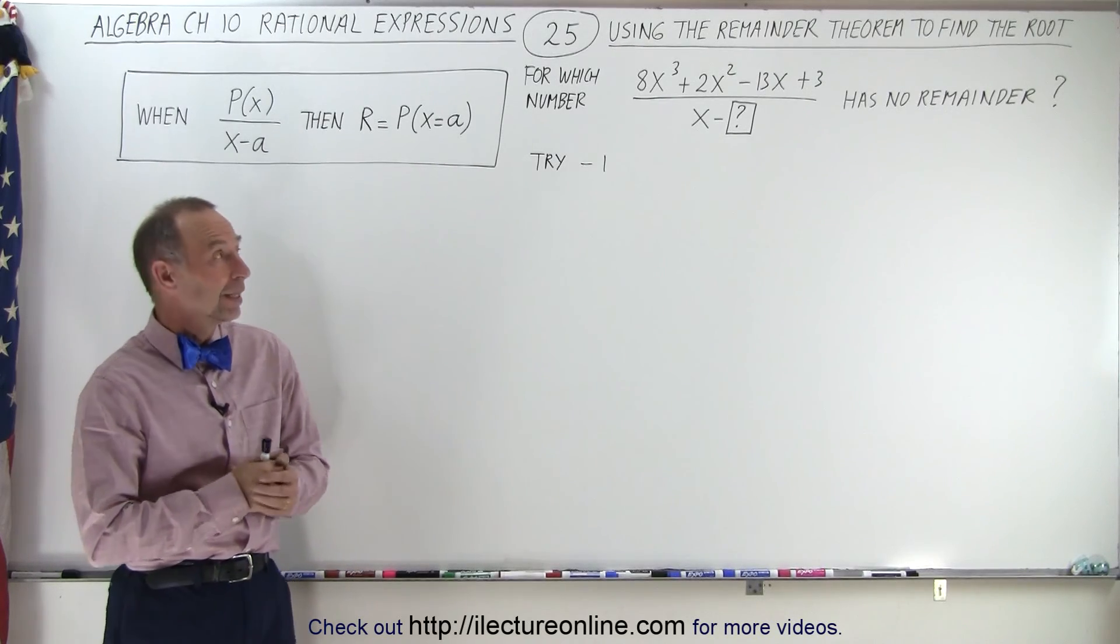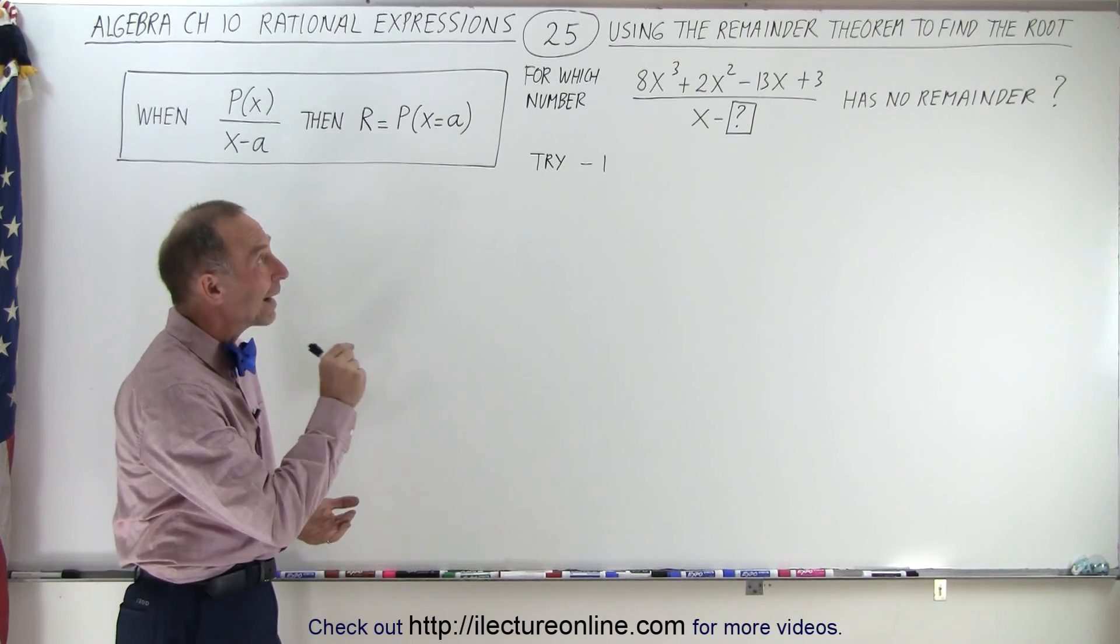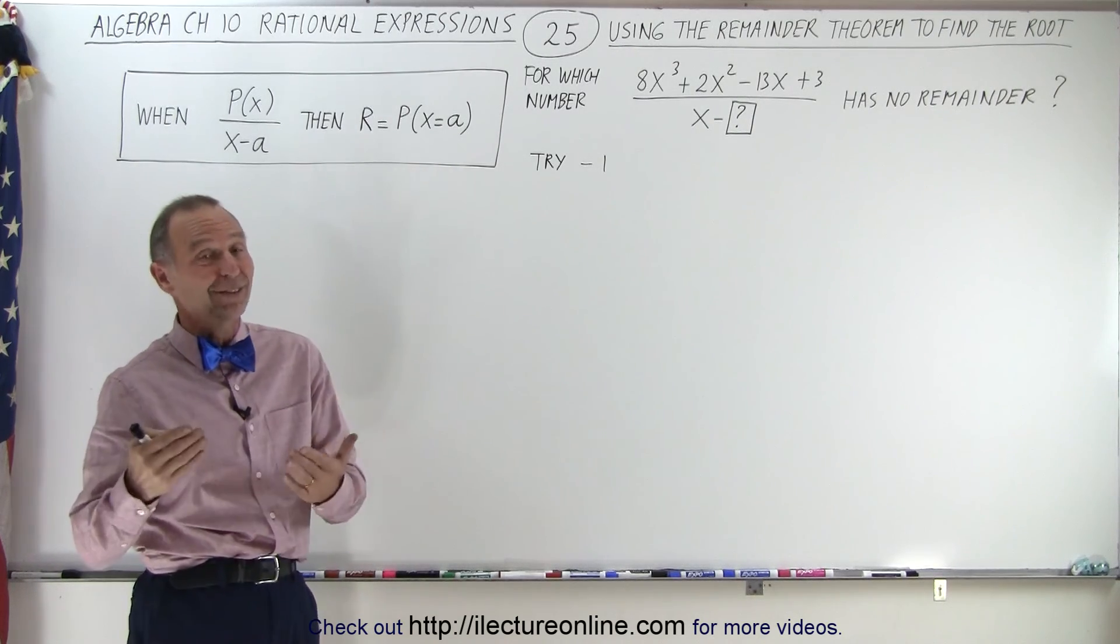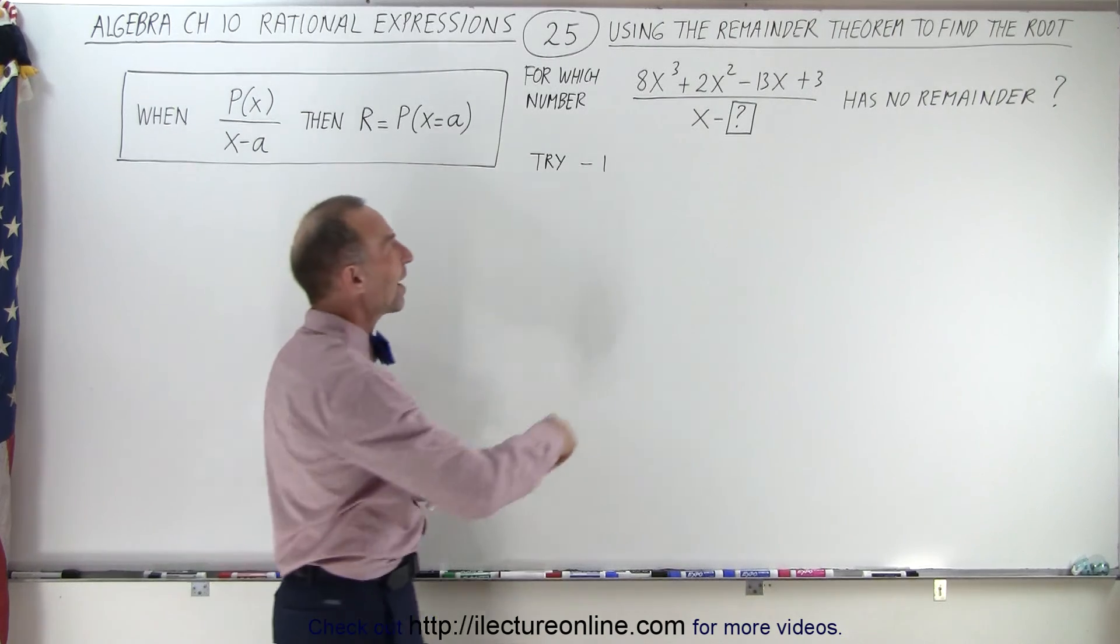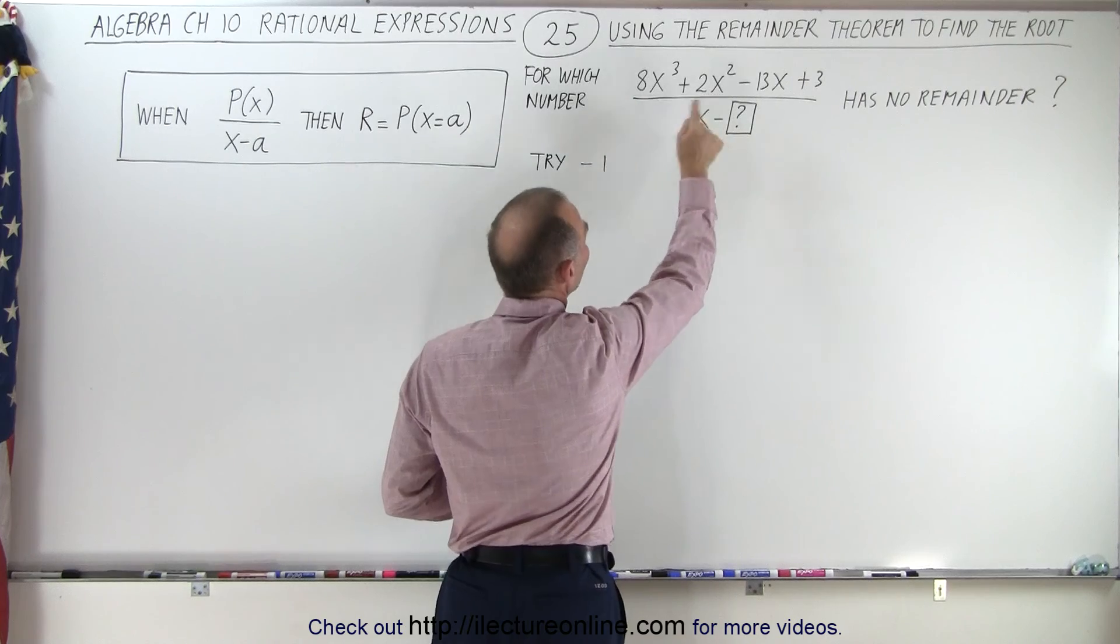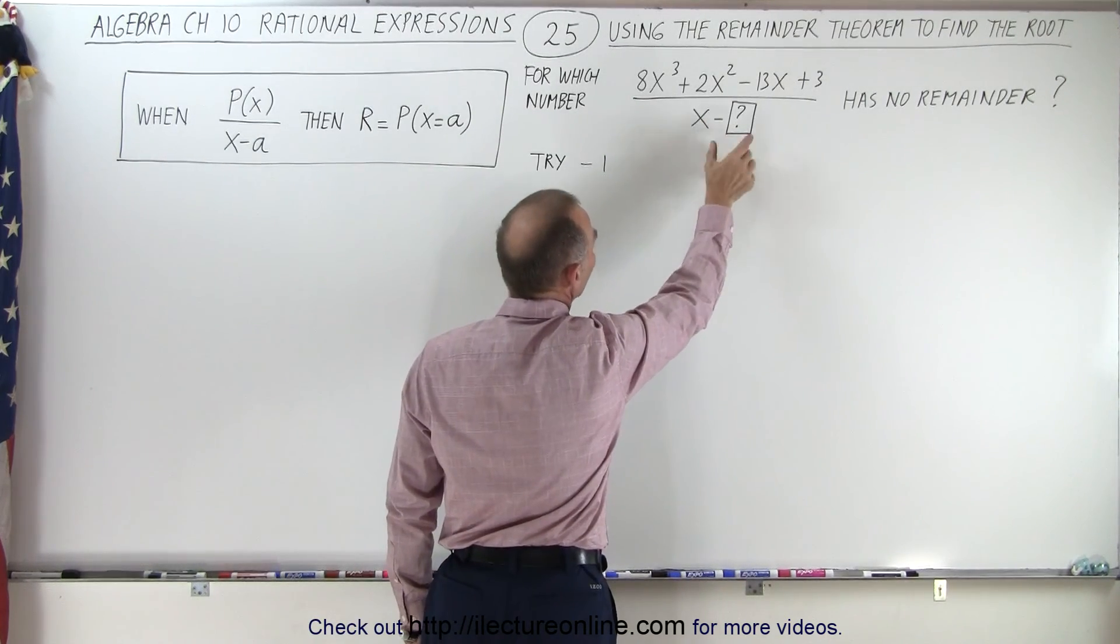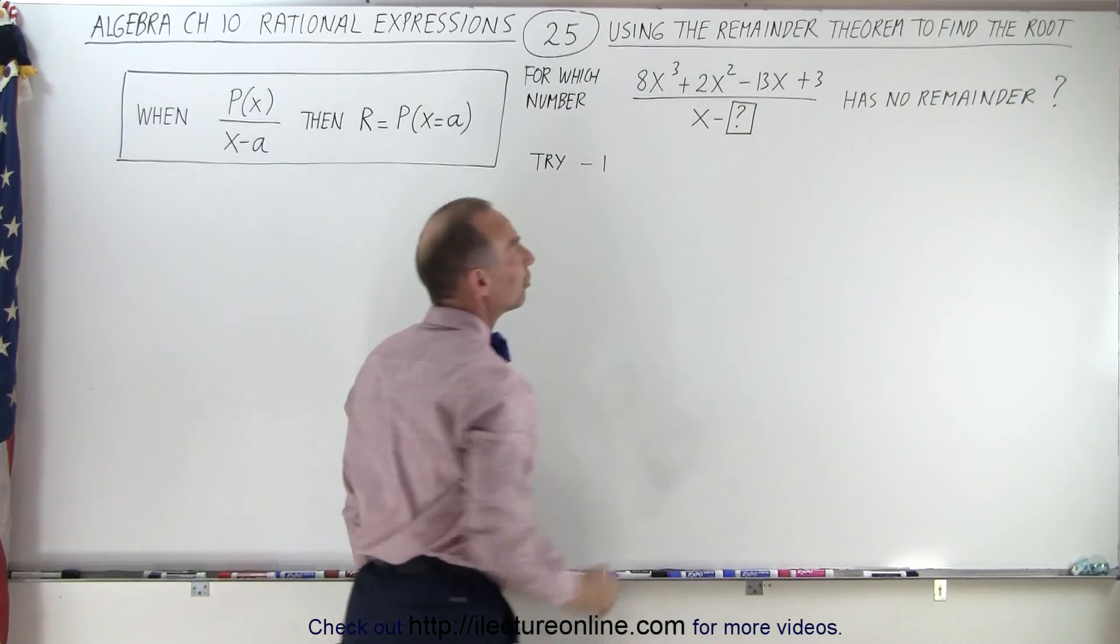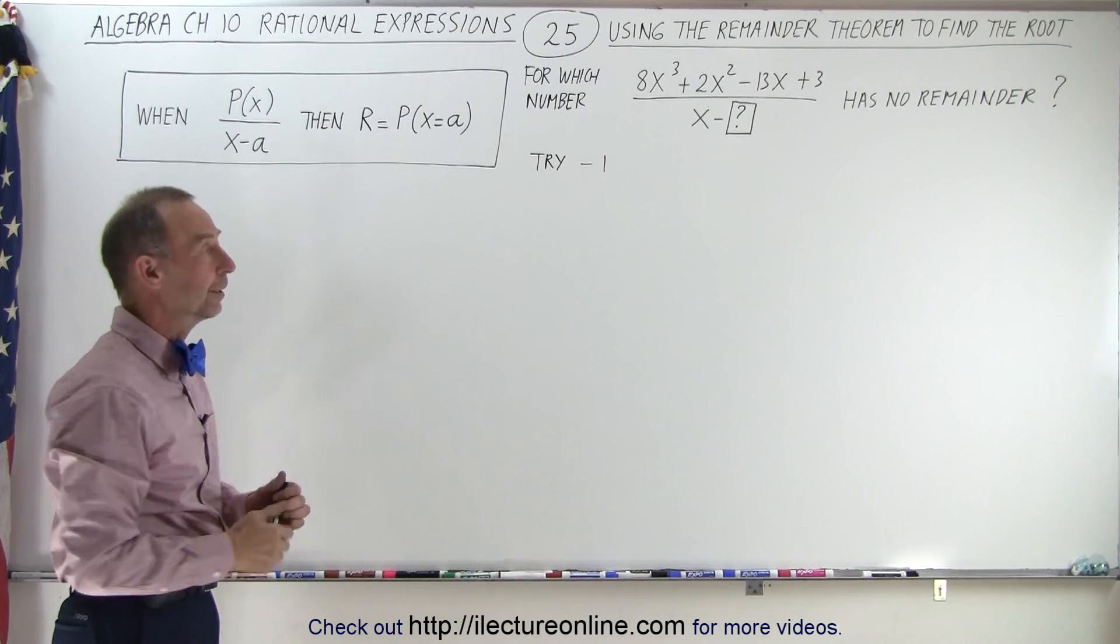Welcome to our lecture online. Now let's reverse the order of ends and use the remainder theorem, not reminder theorem, but the remainder theorem to find the root. With other words, to find the value in the denominator that will perfectly make the denominator fit into the numerator. We're looking for that constant right here, x minus what will fit perfectly into the numerator so that we have no remainder. With other words, we're trying to find the root of the numerator.